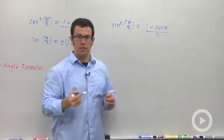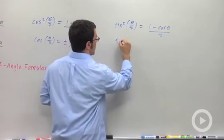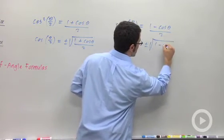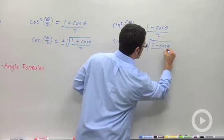And here again, we extract the square roots, and we get sine of theta over 2 is plus or minus the square root of 1 minus cosine theta over 2.